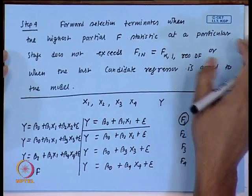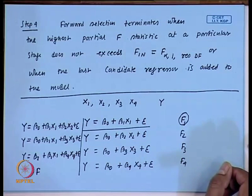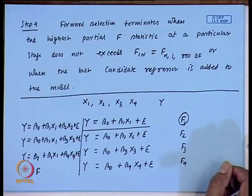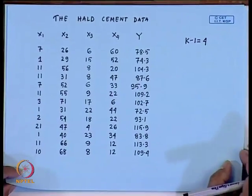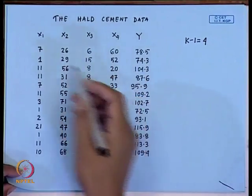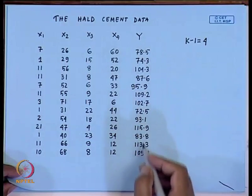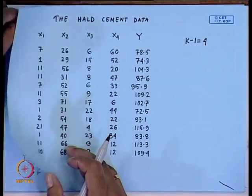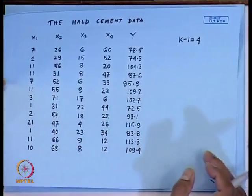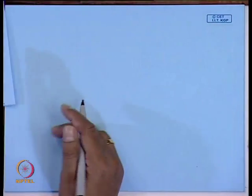Let me explain the algorithm in detail. This is the outline of the algorithm. Now I will be considering the Halt cement data again, which has four regressors and one response variable y. I will illustrate the forward selection technique using the Halt cement data.